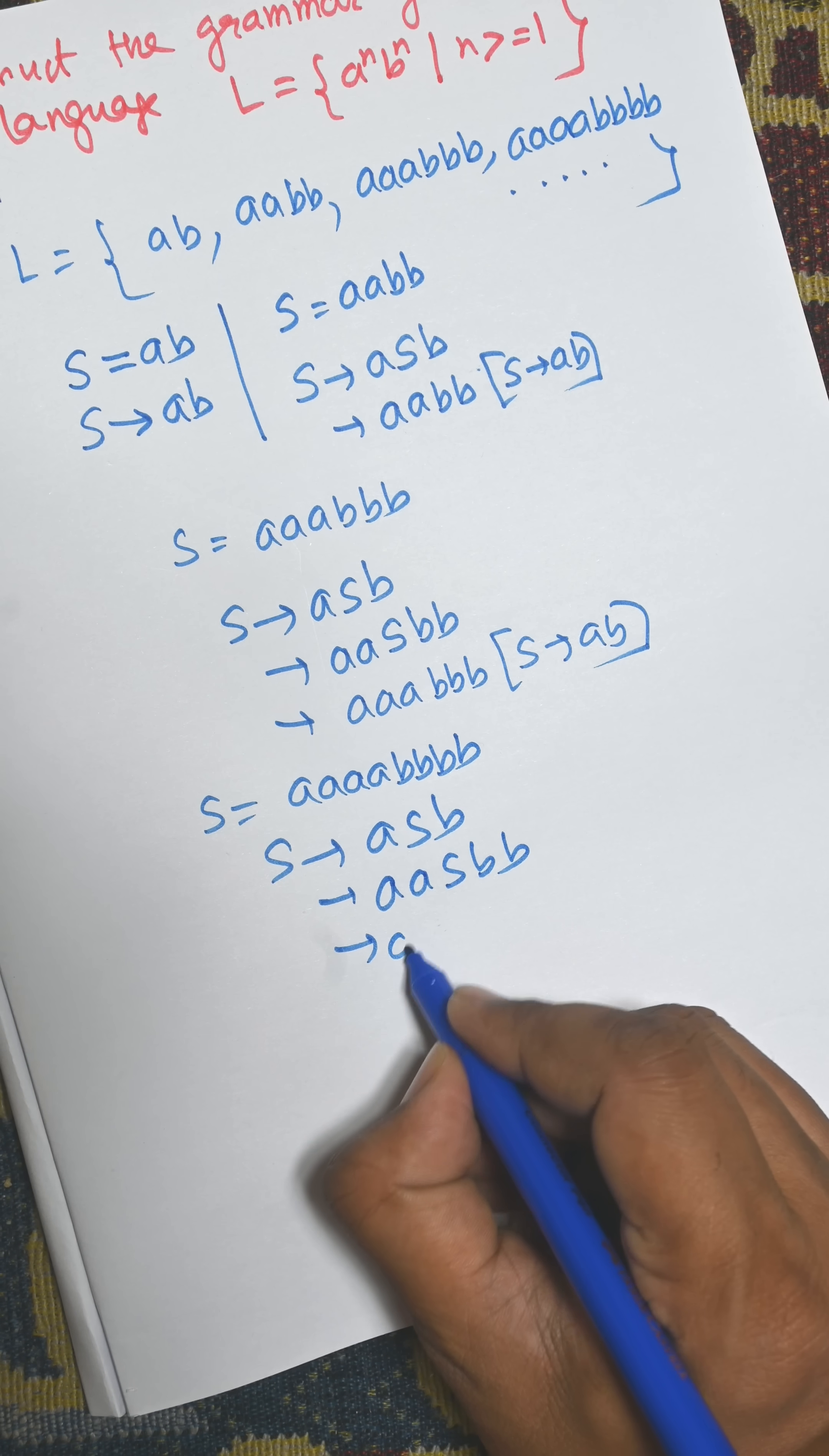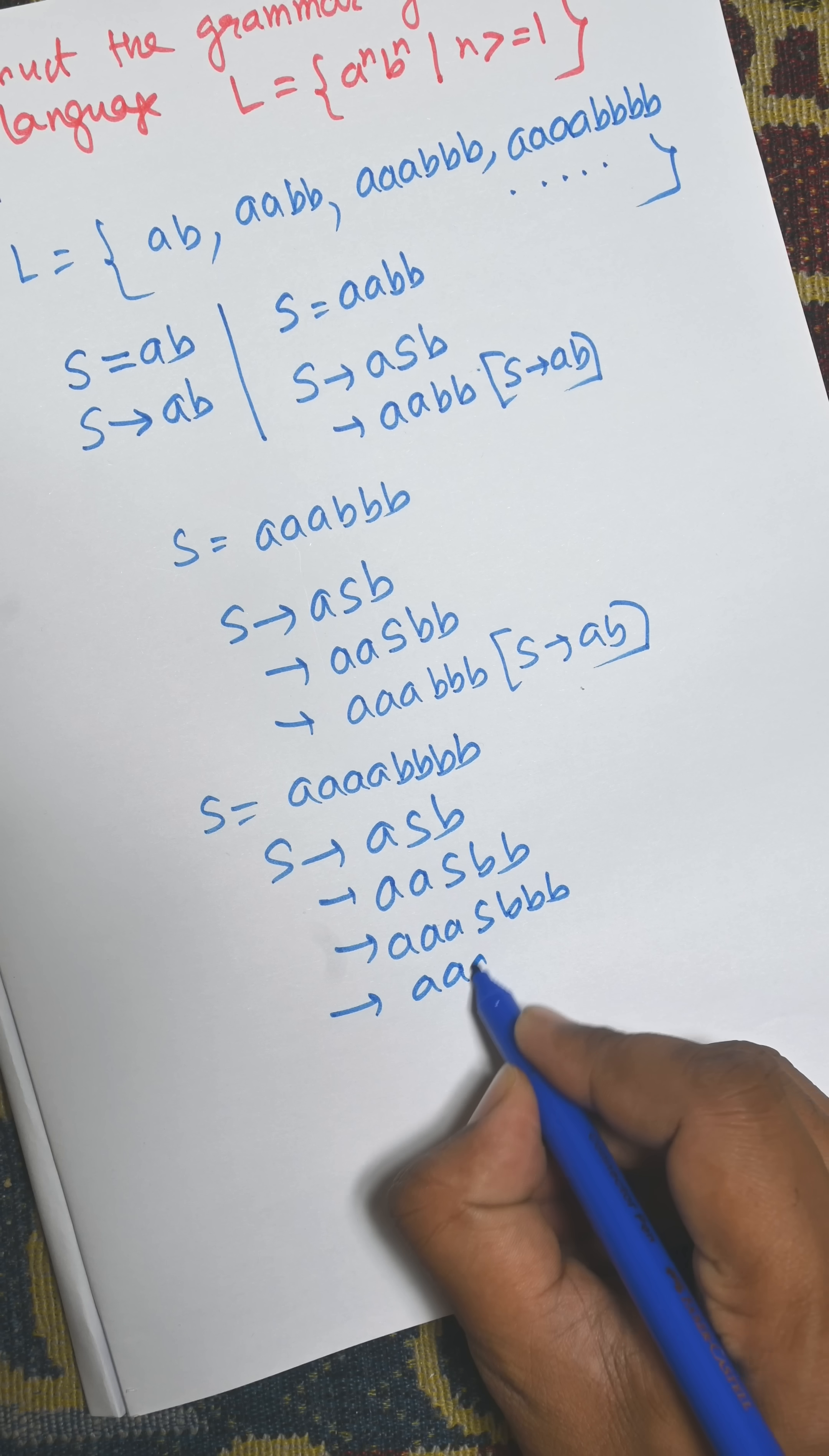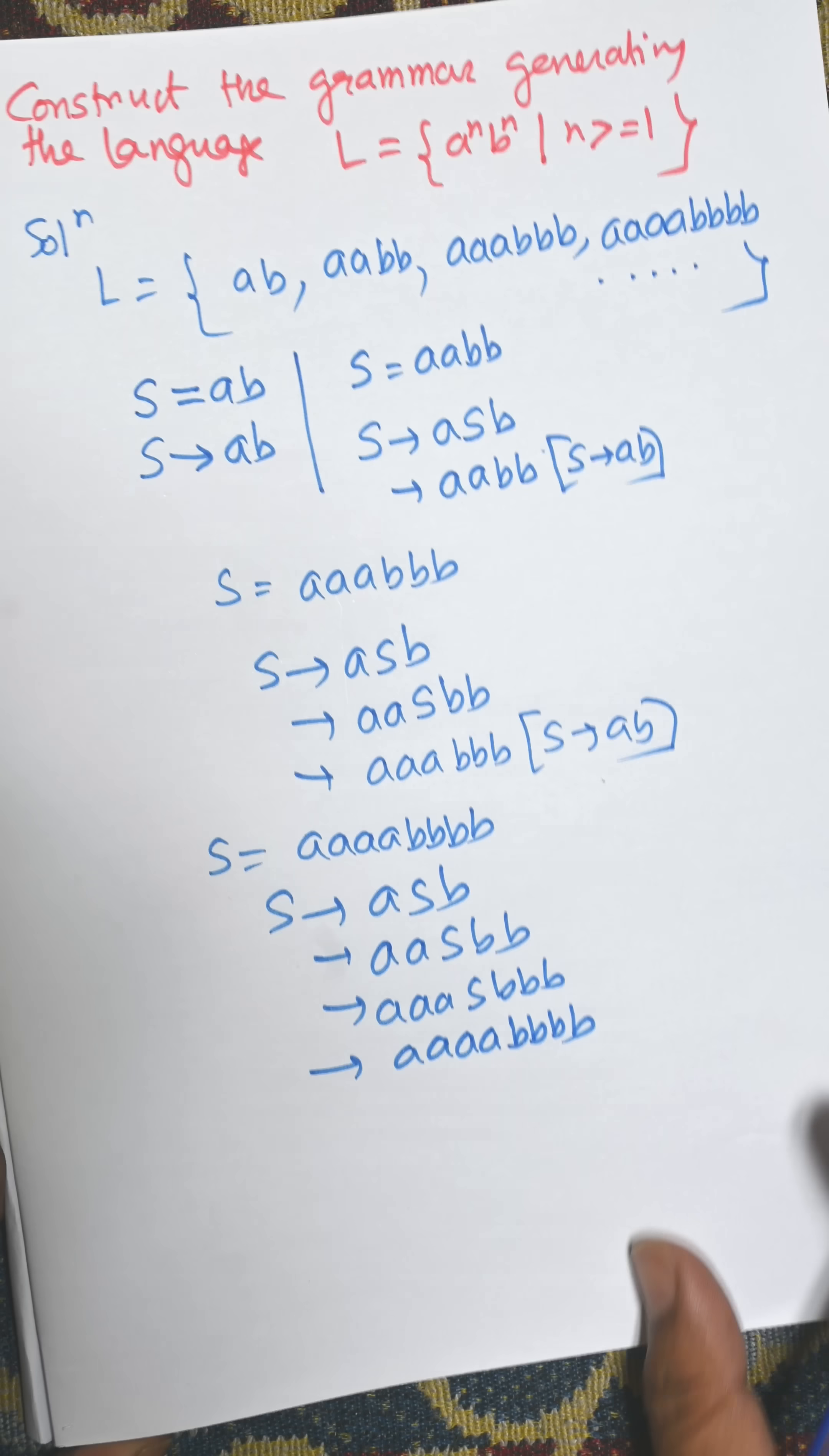Then putting the value of S again gives ASBBB, and finally putting S as AB gives us AAAABBBB. In this way, this production rule satisfies the grammar.